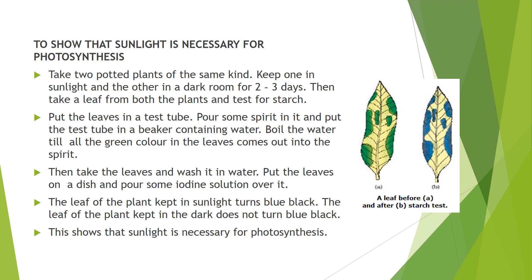Photosynthesis takes place in the presence of sunlight — how will we prove this? We can prove this with the help of an activity. We will take two potted plants of the same kind, keep one plant in sunlight and another plant in a dark room for about 72 hours. Afterward we will pluck one leaf from each plant and perform the starch test. We will put the leaf in spirit and boil the test tube containing spirit in a water bath.